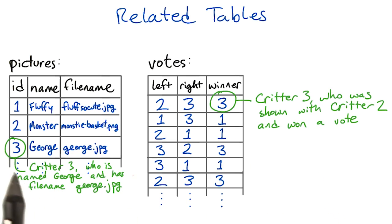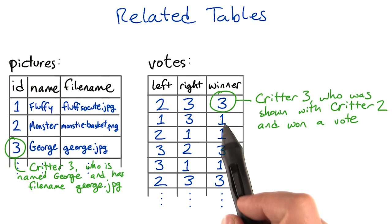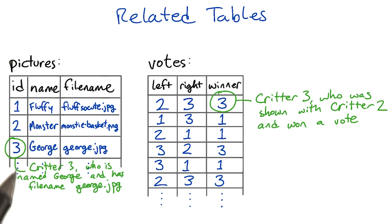This 3 and this 3 refer to the same thing, a cute critter with ID number 3. But they're in different tables, and the columns have different names, because they play different roles in different sentences. Over here, we're saying which picture has which ID, and over here, we're saying which ones have been displayed together and who got the vote.